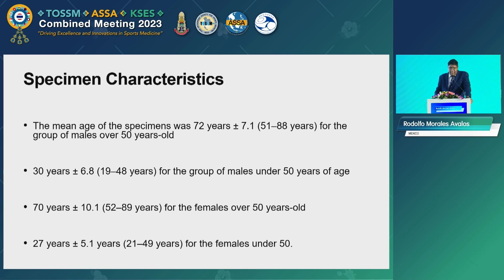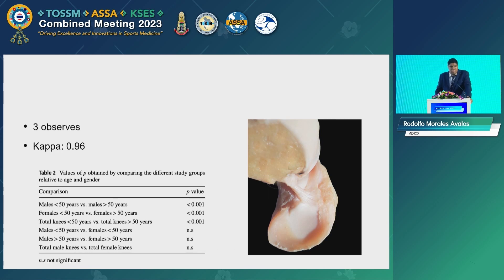Regarding the specimen characteristics, we included male and female cadavers. The mean age of the male specimens in the older group was 72 years old and 30 years for the group of males under 50 years old. For females, 70 years for the group over 50 years old and 27 years for the group under 50 years old. We used three observers and obtained kappa scores for intra-observer agreement. We concluded that there are significant variations in the tibial insertion morphology between cadavers of the younger and older populations.